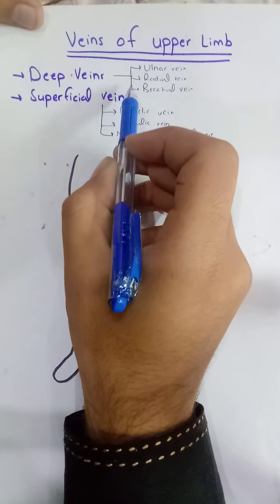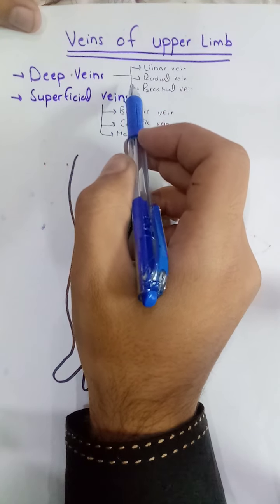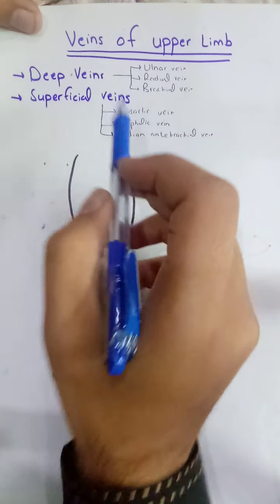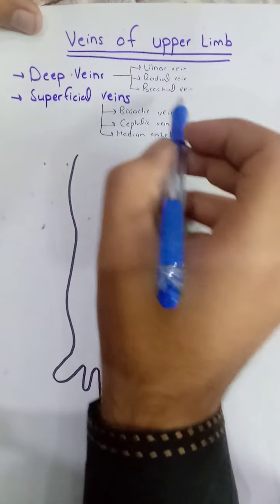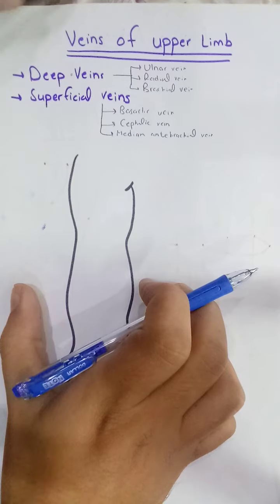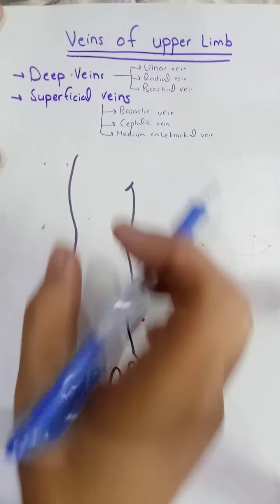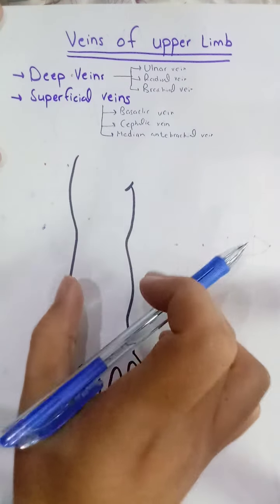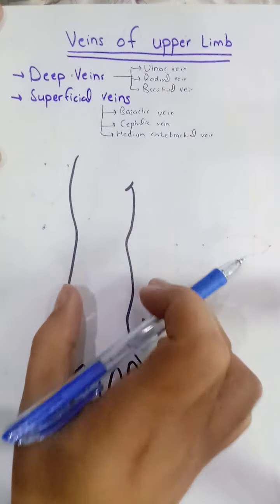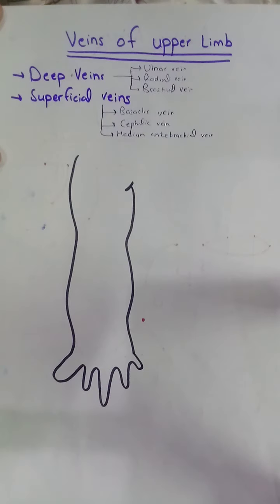The deep veins accompany all the arteries of the upper limb, which has been explained in a separate video. Today we will discuss the superficial veins. This is the upper limb — this part is the arm, this is the forearm, and this will be the hand.